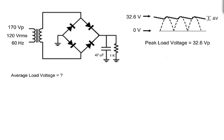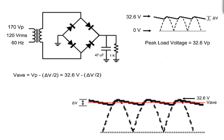But what is the new value of the average voltage? If you draw a line through the middle of the ripple voltage, you can see that the area of the curve above the line is equal to the area below the line.